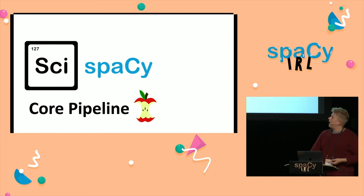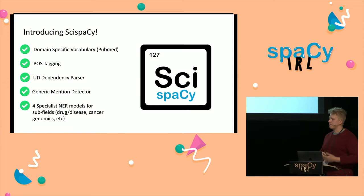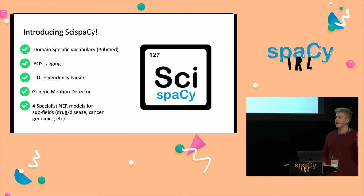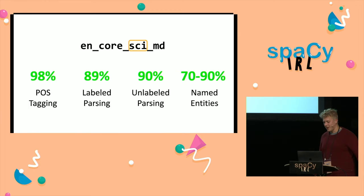Just a bit of info about the core pipeline: it has all the things the existing spaCy pipeline has — POS tagging and a dependency parser, with universal dependencies, which is more modern. It also has a generic mention detector, useful for when you want to do entity linking without specific entity types. We've also got specialist NER models for particular subfields — one for cancer genomics, identifying specific drugs, specific diseases. We're kind of back up to the accuracies you'd expect from a spaCy pipeline, which is great.